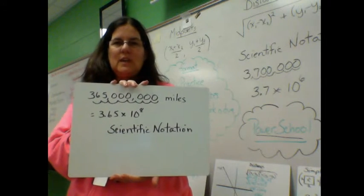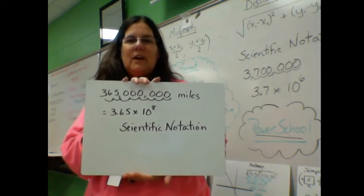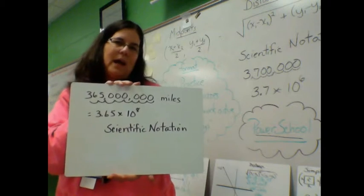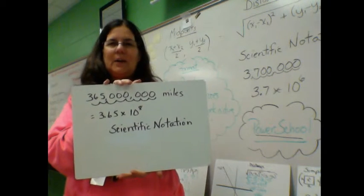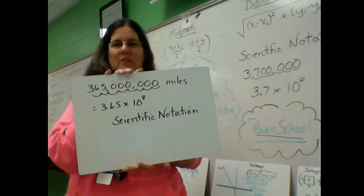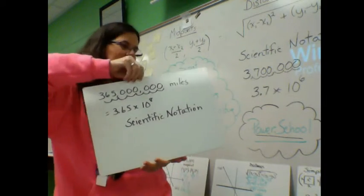Written in scientific notation is 3.65 times 10 to the 8th power. Students will be able to identify how we use scientific notation for very large numbers and very small numbers.